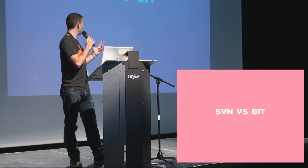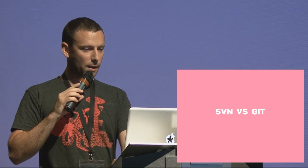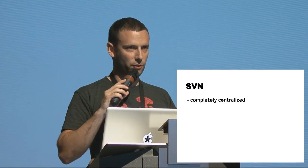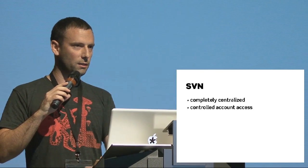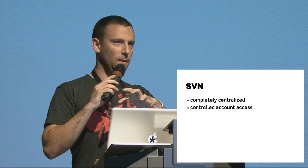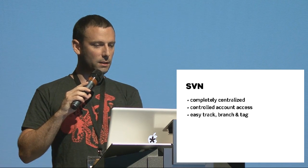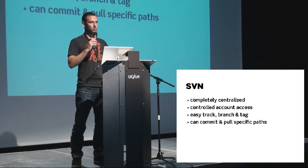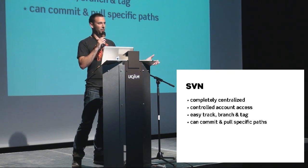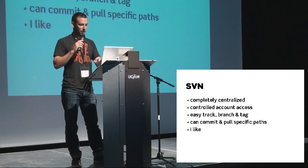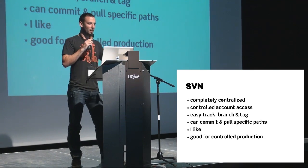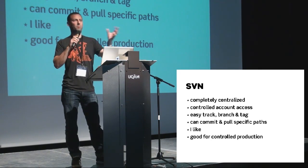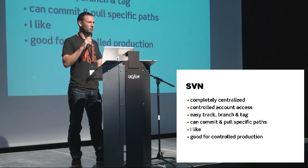I'm going to say something very controversial: I don't really like Git. I know it's very cool and it's very now, but I find working with it very awkward. I do it because GitHub is so awesome. SVN is completely centralized — there is a home hub, a repository, controlling the right version, and everyone's committing and pulling from that centralized place, which is also good for controlled account access. It's easy to track, branch, and tag. WordPress itself uses SVN. I like being able to commit stuff and then pull just one file — I know I made one change and I want just that file. You can't do that with Git; it's all or nothing. SVN is good for controlled production because there's a single point of entry, easier to lock down, and it somehow merges better.